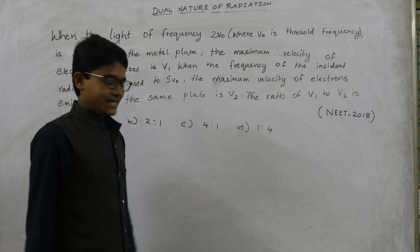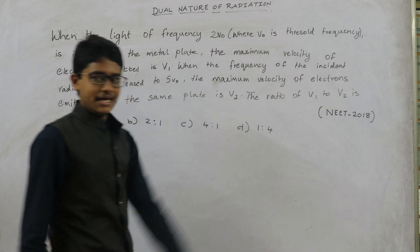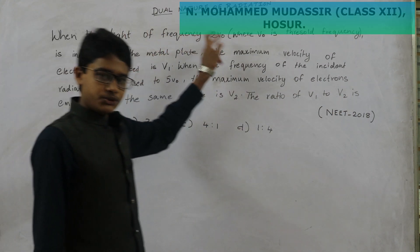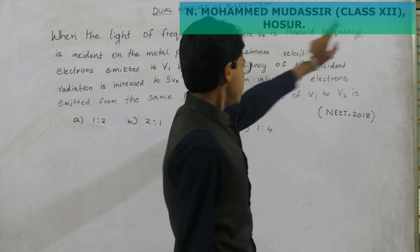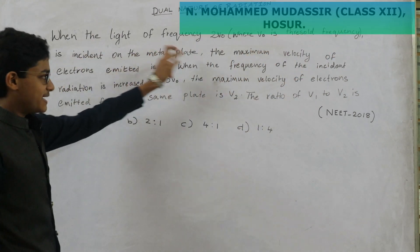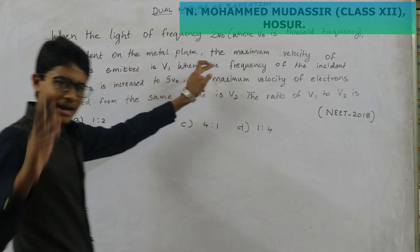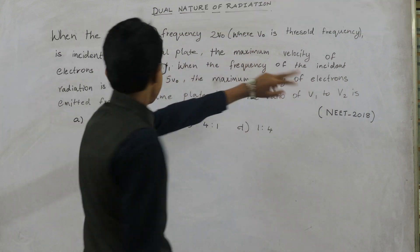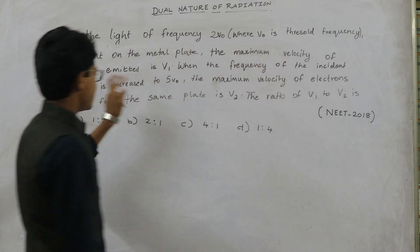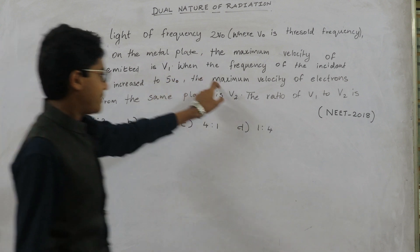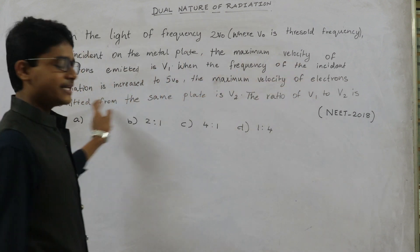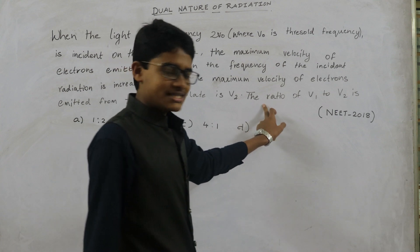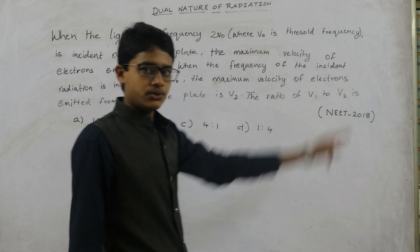The question I am going to read is repeated in NEET 2018. The question is: when light of frequency 2ν₀, where ν₀ is the threshold frequency, is incident on a metal plate, the maximum velocity of the electrons emitted is V1. When the frequency of the incident radiation is increased to 5ν₀, the maximum velocity of the electrons emitted from the same plate is V2. Find the ratio of V1 to V2.